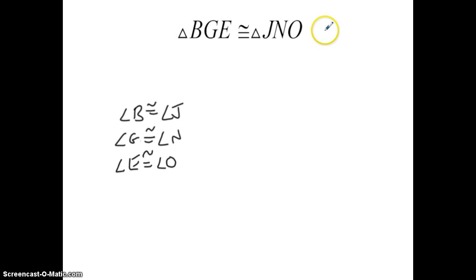You can also tell which sides are congruent using the congruent statement. So since letters BG are the first letters and JN are the second letters, we could say that side BG is going to be congruent to side JN. And then you look at the second and third letters and the second and third letters, and you would know that GE is congruent to NO.